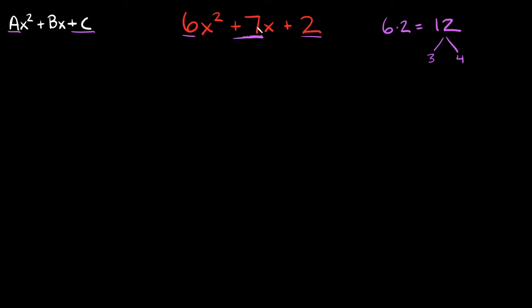So the next thing we want to do is replace this 7 with a 3 and a 4, but we're going to do it in a specific way. First of all let's bring down these terms. We're going to bring down our 6x squared, bring down your A and your C which is a positive 2, plus 2.